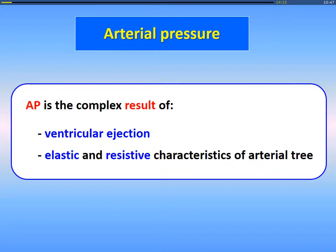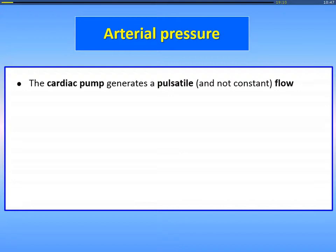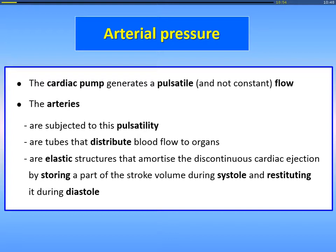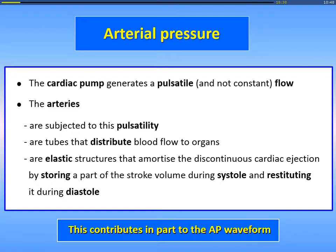The cardiac pump generates a pulsatile and not a constant flow. The arteries are subjected to this and distribute blood flow to organs. They are elastic structures that amortize the discontinuous cardiac ejection by storing — this is very important — storing a part of the stroke volume during systole and restituting during diastole. And this contributes, in part, to the arterial pressure waveform.